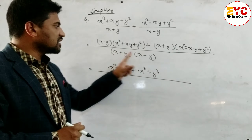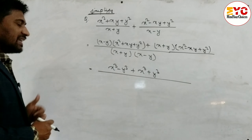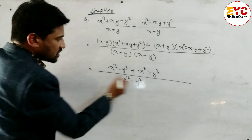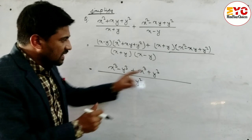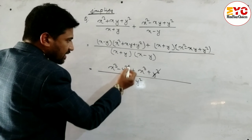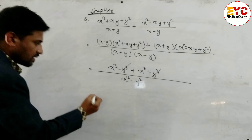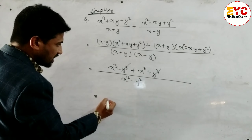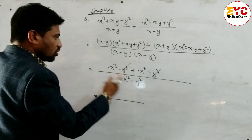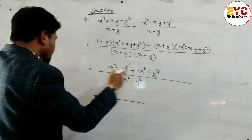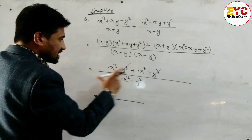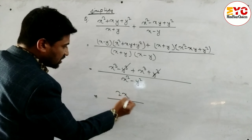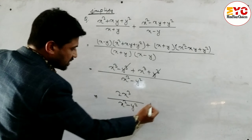In the denominator, (x + y)(x - y) is in the form of (a + b)(a - b), which equals a² - b², so we write x² - y². In the numerator, -y³ and +y³ have opposite signs so they cancel. Then x³ + x³ are like terms, so we add them to get 2x³. The final answer is 2x³ / (x² - y²).